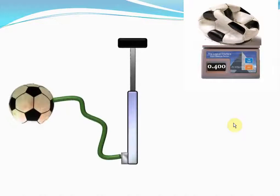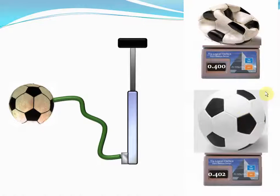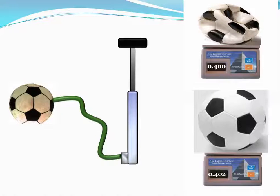Now let's use the same bicycle pump to fill air in this football. When we do that and weigh the football, we see that the weight of the football has now become 0.402 kg. Where has that extra weight come from? Of course, it has come from the air inside the football, because without the air the football weighed less, but with the air the football now weighs more. And that tells us that air has mass. Therefore, since air has mass and it occupies space, air is matter too.